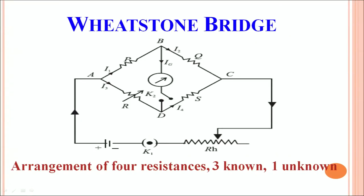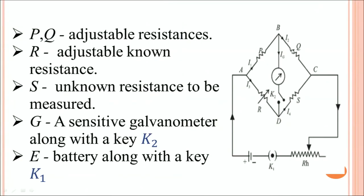This is the schematic representation of Wheatstone Bridge. As you can see here, it is an arrangement of 4 resistances P, Q, R and S. Three of them are known and one resistance is an unknown resistance. We can find out the unknown resistance in terms of the other 3 resistances. P and Q are adjustable resistances; generally when you perform the experiment you keep them in a certain ratio, but they are known resistances.